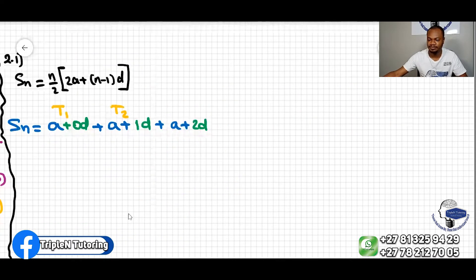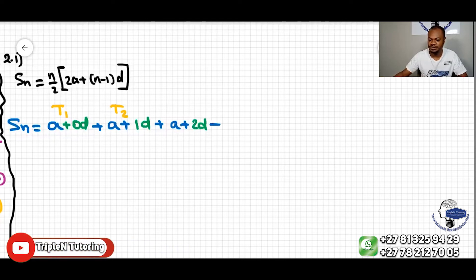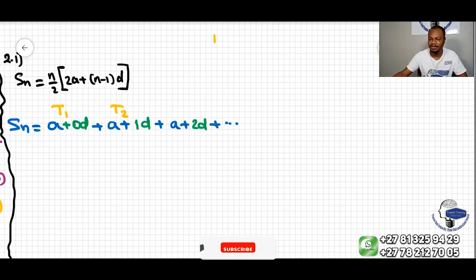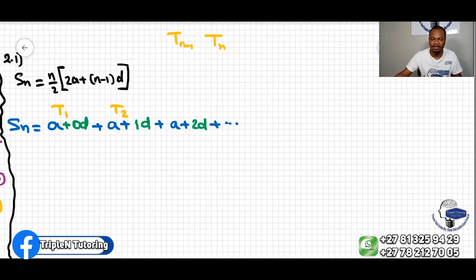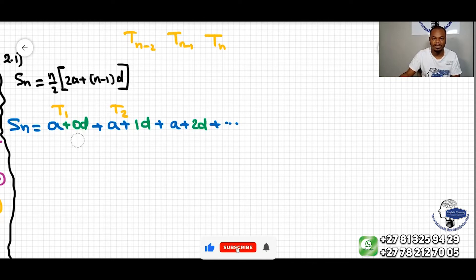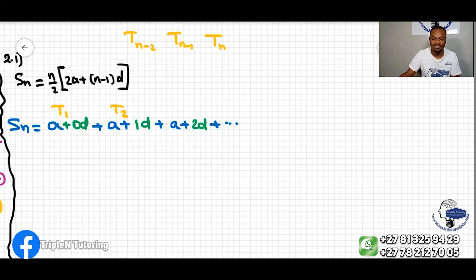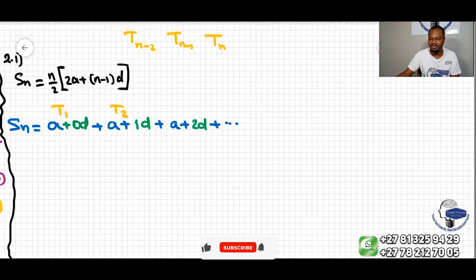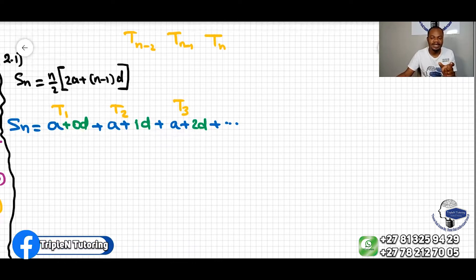Then we have a dot dot dot for the middle terms, and we need the last three terms. The last term is tn, so the previous term is tn minus 1, and the one before that is tn minus 2. Notice the pattern: the coefficient of d is always 1 less than the index of the term. So for term 1 the coefficient is 0, for term 2 it's 1, and for term 3 it's 2.